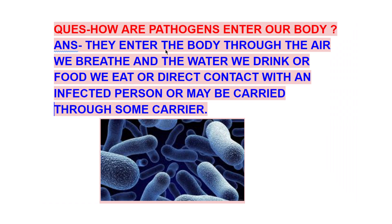How do pathogens enter our body? They enter the body through the air we breathe, the water we drink, or the food we eat, or through direct contact with an infected person, or sometimes they may be carried through a carrier. A carrier can be a mosquito or a housefly.